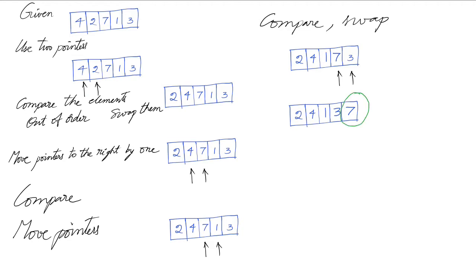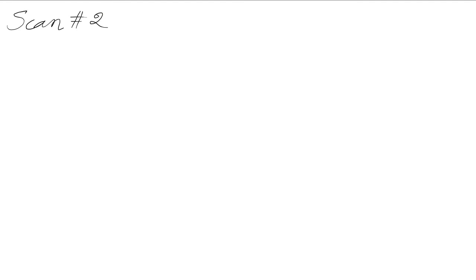We get [2, 4, 1, 3, 7]. At the end of the first scan through the array, the largest element — seven — has reached its correct slot at the right end. Scan one has ended. Initially seven was in the middle; now it's at the end of the list.